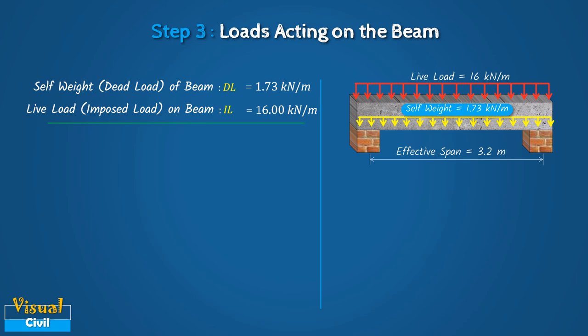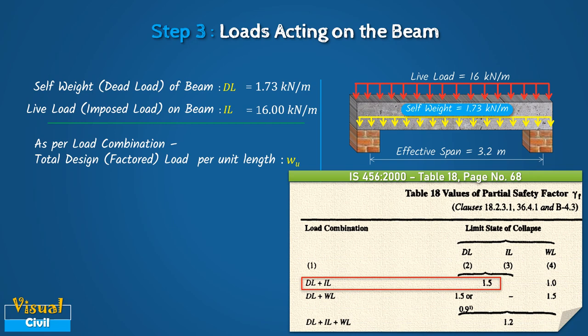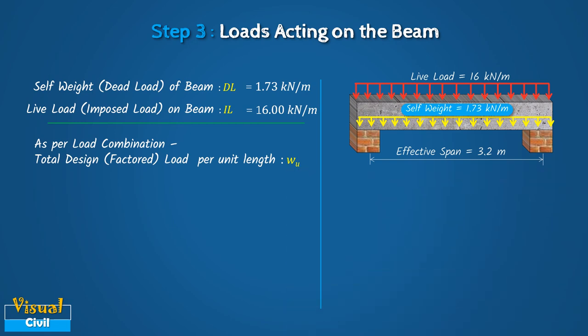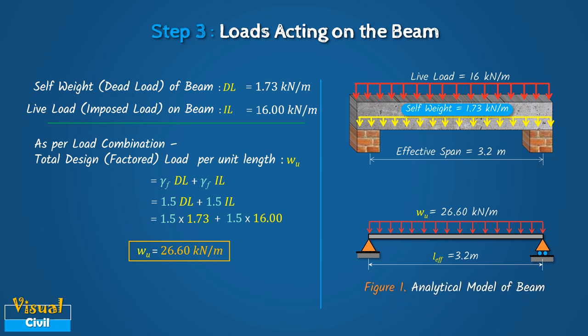After getting dead load and imposed load, compute the total design or factored load per unit length using a load combination of dead load plus live load with a partial safety factor of 1.5 as given in table 18 of IS456. Thus, the total factored load equals 1.5 times dead load plus 1.5 times imposed load, which is equal to 26.6 kN per meter. This gives the analytical model of a simply supported beam as shown in figure 1 to calculate bending moment and shear force.